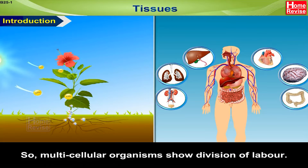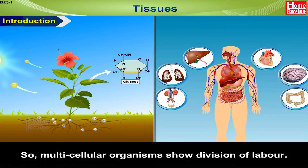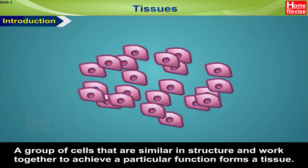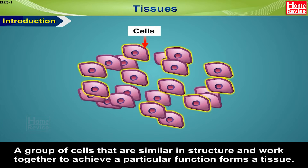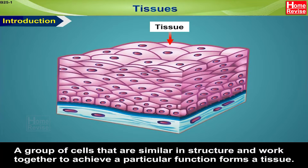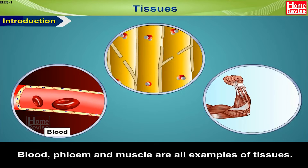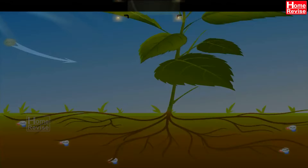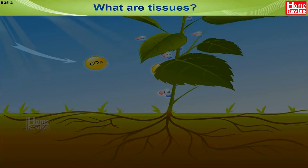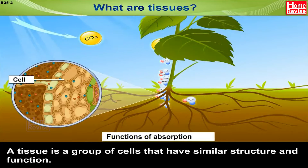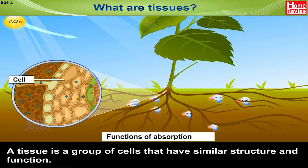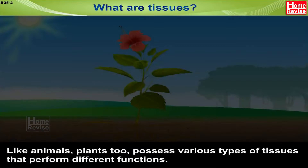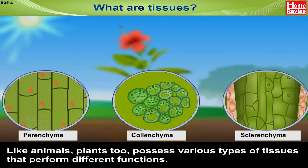So multicellular organisms show division of labor. Blood, phloem, and muscle are all examples of tissues. A tissue is a group of cells that have similar structure and function. Like animals, plants too possess various types of tissues that perform different functions.